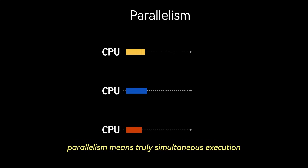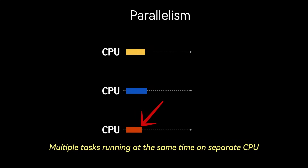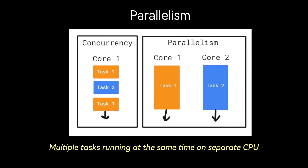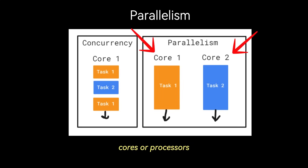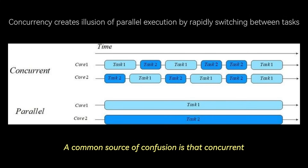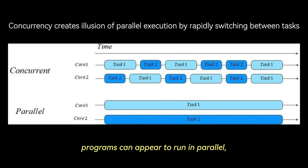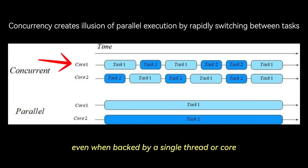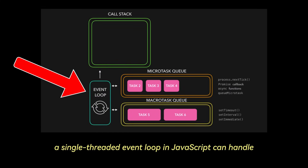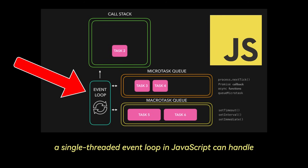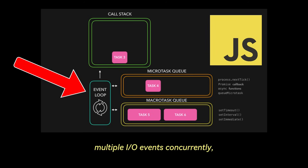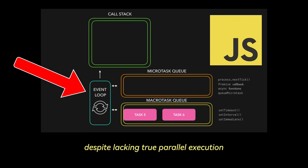In contrast, parallelism means truly simultaneous execution — multiple tasks running at the same time on separate CPU cores or processors. A common source of confusion is that concurrent programs can appear to run in parallel, even when backed by a single thread or core. For example, a single-threaded event loop in JavaScript can handle multiple I/O events concurrently, despite lacking true parallel execution.